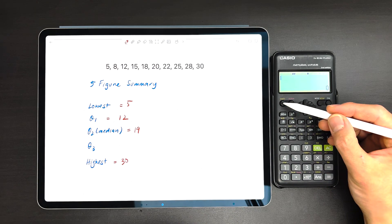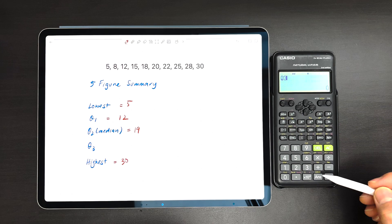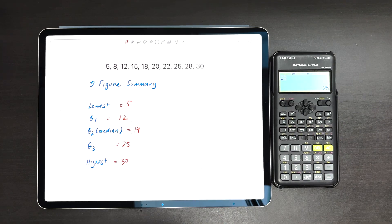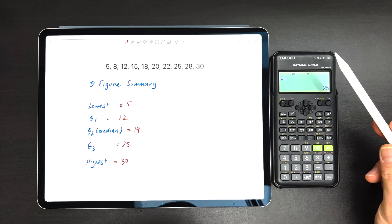Once again, AC, Shift 1, 5 for Min Max, Q3, and we're done. So that's the third quartile. Hope you enjoyed this video. That was a quick one on how to find the five-figure summary using this Casio calculator.